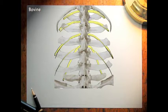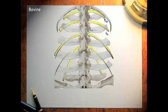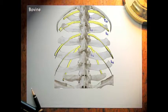The 13th thoracic spinal nerve is going to cross the tip of the transverse process of the first lumbar vertebra. Likewise the first lumbar spinal nerve crosses the tip of the second lumbar vertebra transverse process. As we move caudally there is more sloping, such that the second lumbar spinal nerve actually crosses the tip of the transverse process of the fourth lumbar vertebra.